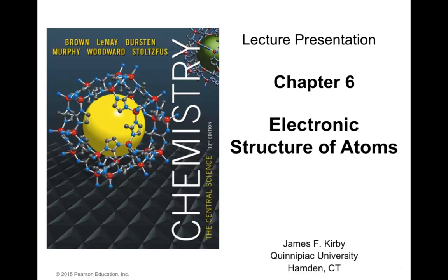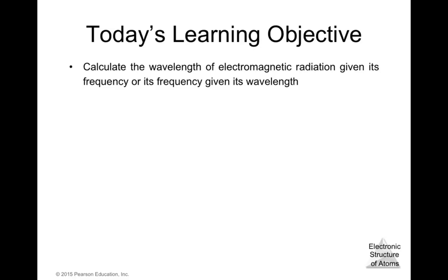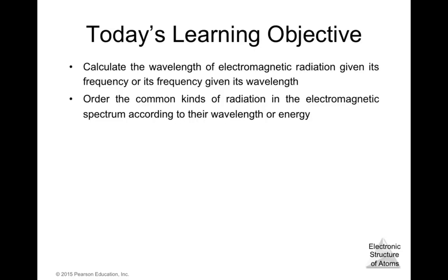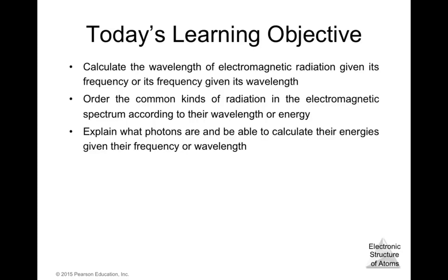In this chapter we're going to discuss the electronic structure of atoms. By the end of this chapter we'll be able to calculate the wavelength of electromagnetic radiation given its frequency, or its frequency given its wavelength. We'll also be able to order the common kinds of radiation in the electromagnetic spectrum according to their wavelength or energy, and explain what photons are and calculate their energies given their frequency or wavelength.